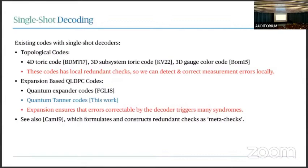Each approach — using locally redundant checks or using expansion — attacks one aspect of the two issues: having a large error with small syndrome, or having undetectable syndrome errors. I'd also like to point you to the work by Campbell, which formulated the idea of using redundant checks and constructed codes with redundant checks using meta-checks and chain complexes, which is extremely helpful for understanding single shot.